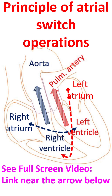In the ideal surgery for transposition of great arteries, known as the arterial switch operation, the abnormally positioned aorta and pulmonary artery are switched back to their expected positions. Coronary arteries are also transposed. The arterial switch operation was described in 1975.